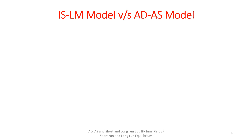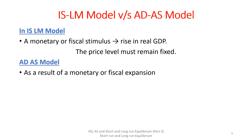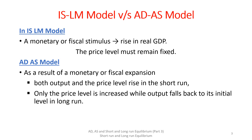In the ISLM model, we studied that stimulus through increase in money supply, increase in government expenditures, or decrease in taxes results in rising real GDP. However, the price level is assumed to remain fixed. Whereas in the aggregate demand and aggregate supply model, the result of a monetary or fiscal expansion is that both output and price level rise in the short-run, while in the long-run only the price level increases but output level comes back to its initial level, i.e., the natural or potential level. We shall study this in this lecture.